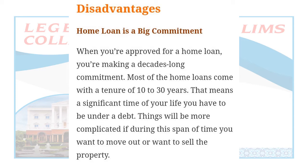Now disadvantages. First: the home loan is a big commitment. کوئی بھی loan آپ کے لئے commitment ہے، آپ کے لئے liability ہے۔ آپ نے دس لاکھ لیے ہیں یا دس کروڑ لیے ہیں — آخر وہ آپ کو واپس کرنے ہیں۔ When you are approved for a home loan, you are making a decades-long commitment — for example 10 سال کے لیے آپ نے home loan لیا ہے، آپ اپنے آپ کو bound کر رہے ہیں کہ وہ payment لازمی واپس کرنی ہے۔ At the same time you have to work for that payment.